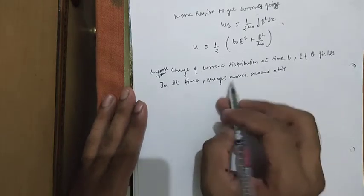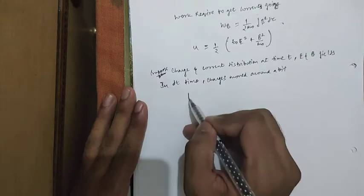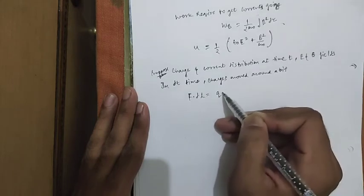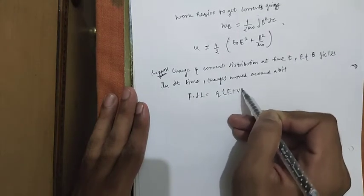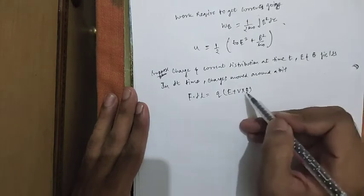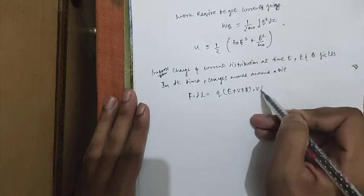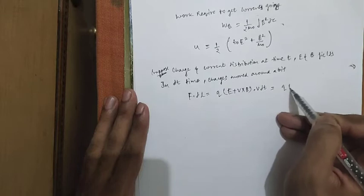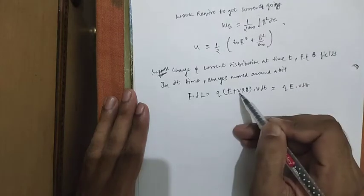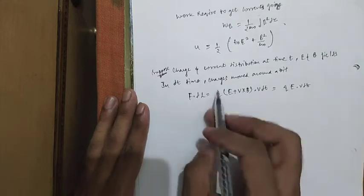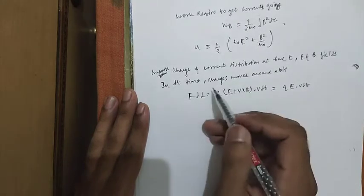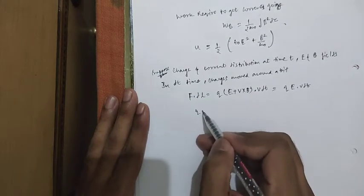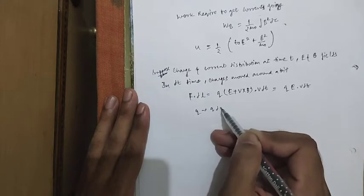According to the Lorentz force, F·dl = q(E + v × B), and dl = v dt. This equals q(E·v)dt because by the vector property, (v × B)·v = 0.